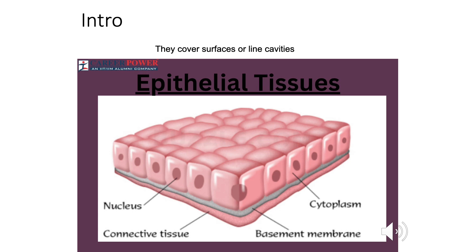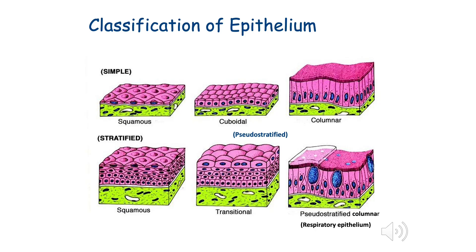As we have already talked about, in the diagram you see some cells sitting on a flat surface. The cell has a nucleus and the surface it is sitting on is a basement membrane. You can see the nucleus as well as the cytoplasm. We can classify epithelia based on their shape and the number of cell layers. If it has one cell layer, we say it is simple; if it has more than one cell layer, we say it is stratified.